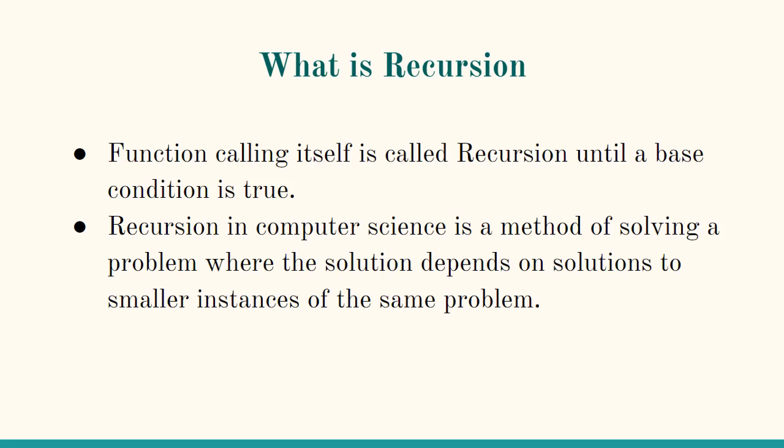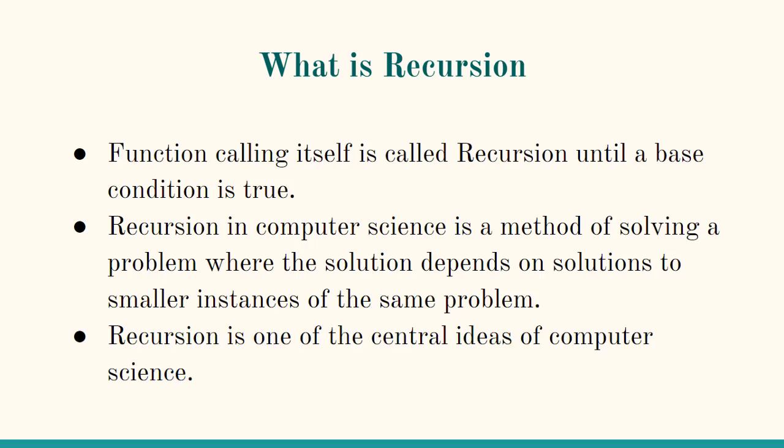Recursion is a very important method in computer science to solve problems wherein you need to divide the problem into smaller chunks and then work on each of the smaller chunks. This is very commonly used in many different algorithms. But today in this video we are going to see only the factorial. Recursion is one of the central ideas of computer science.